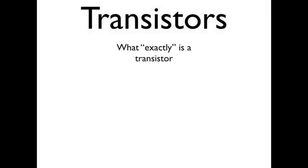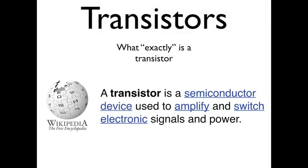Transistors. What exactly is a transistor? Well, according to Wikipedia, it's a semiconductor and it's used to amplify and switch signals and powers. Now, for the purpose of this video, we're going to focus on its purpose as a switch.